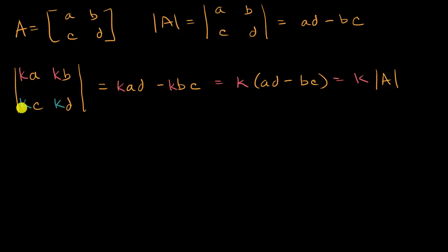Well then, I'm gonna have KA times KD, so you're gonna have a K squared there, and then you're gonna have KB times KC, and so this would actually be, you could factor out a K squared, and so this is going to be K squared times the determinant of A.